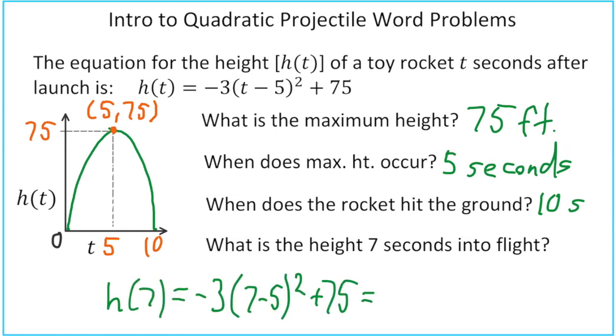So if we evaluate 7 here, we do parentheses first. So 7 minus 5 is 2, 2 squared is 4, so we've got negative 3 times 4 plus 75.